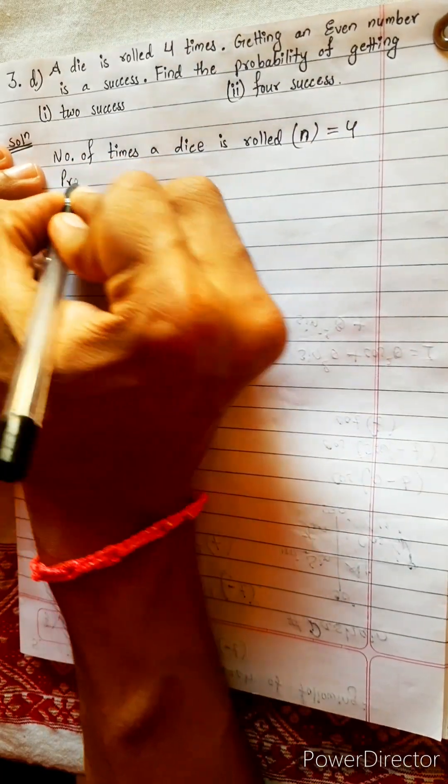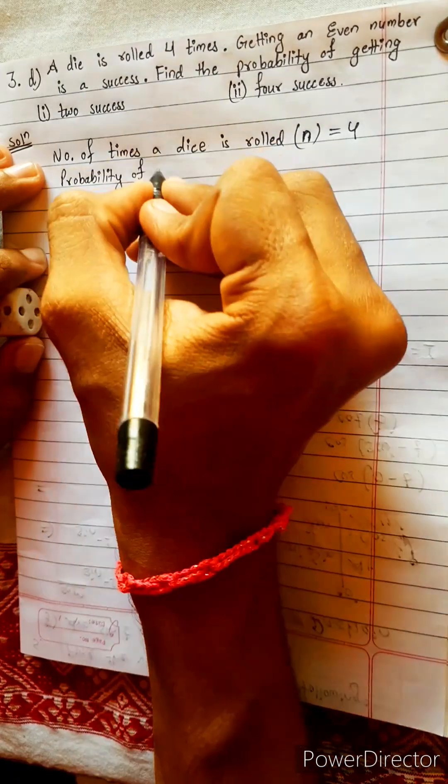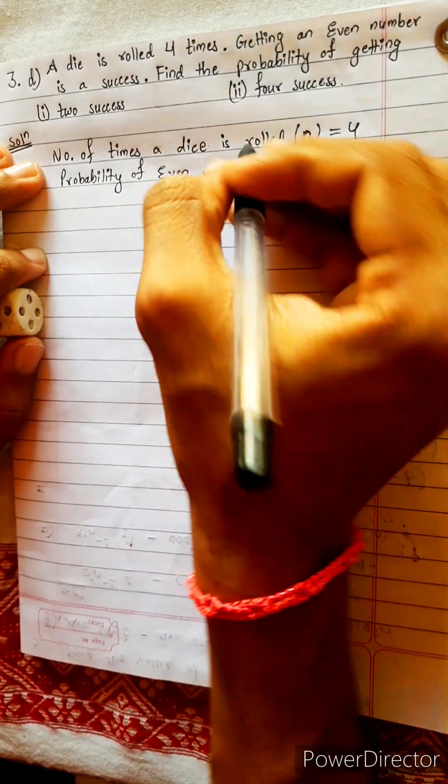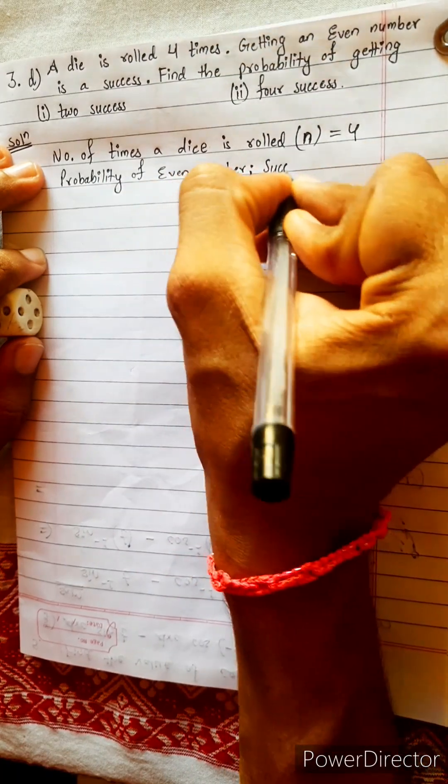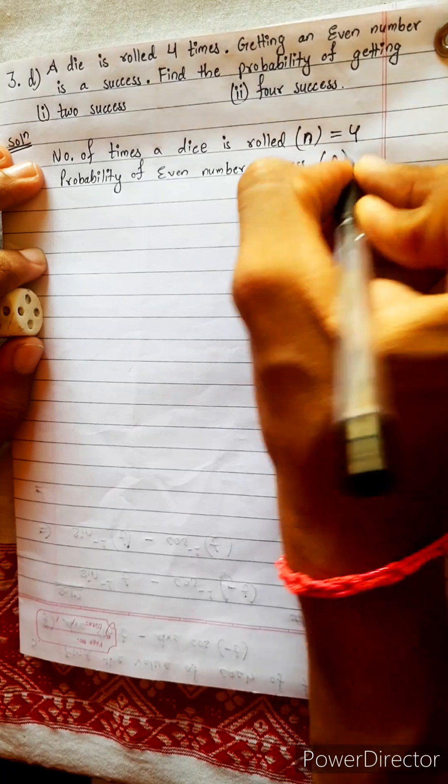Getting an even number is a success. Directly, probability of even number, even number means success. Also mention it like success. Probability of success, let's write P. P equals to how much?